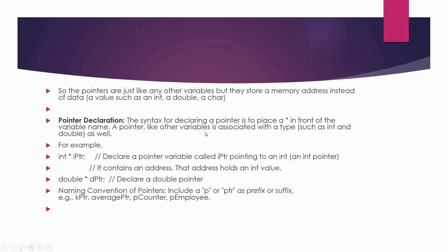The syntax for declaring a pointer is to place an asterisk or star mark in front of the variable name. A pointer, like other variables, is associated with a type such as int or double. For example, 'int* iptr' is pronounced as 'pointer to an integer' — IPTR is pointer to an int. Similarly, 'double* dptr' declares a pointer to a double. Naming conventions for pointers include a 'p' or 'ptr' as a prefix or suffix, e.g., p_counter, p_employee, k_ptr, average_ptr.